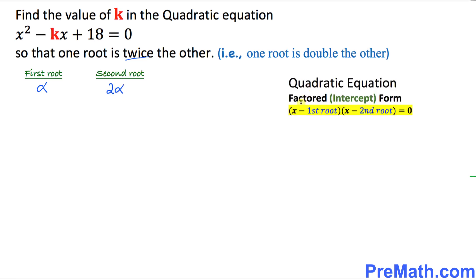And we also know that the quadratic form of a quadratic equation is x minus the first root times x minus the second root equal to zero. So I can write it like this way. I can write x minus one parenthesis and x minus the second parenthesis equal to zero. And here the first root is alpha and here is two alpha.